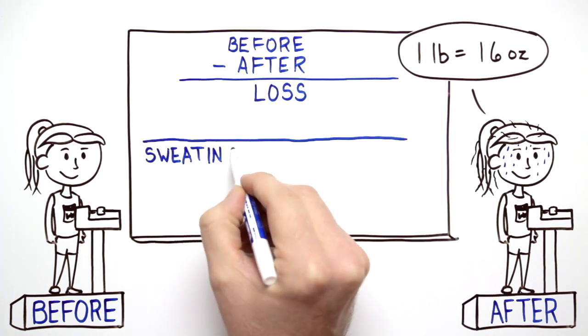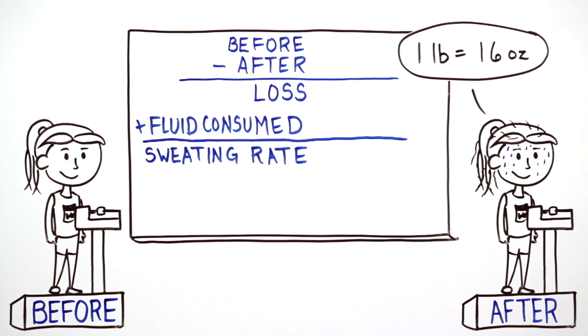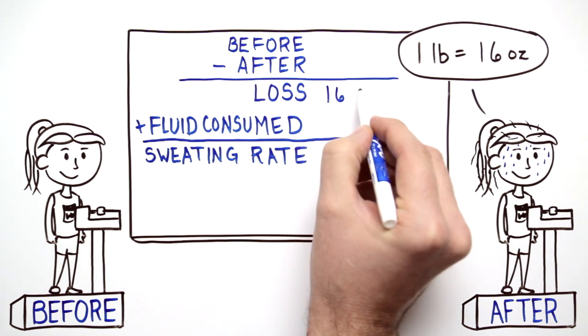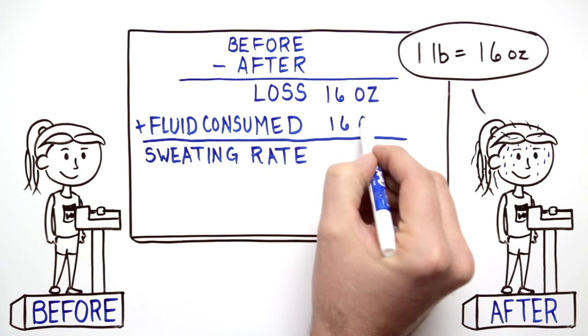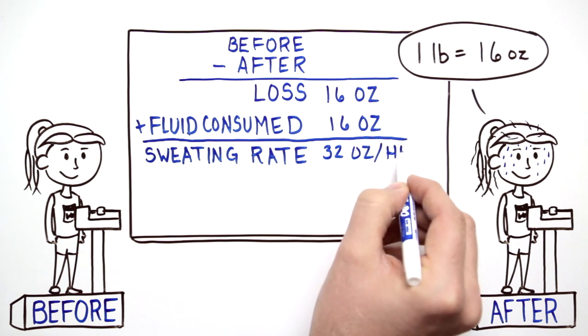To understand the total sweating rate, the amount of fluid the athlete drinks during exercise is added back in. So if an athlete loses a pound during one hour of training, or the equivalent of 16 ounces of fluid, but also drinks 16 ounces of water during the same time, the athlete's sweating rate is 32 ounces an hour.